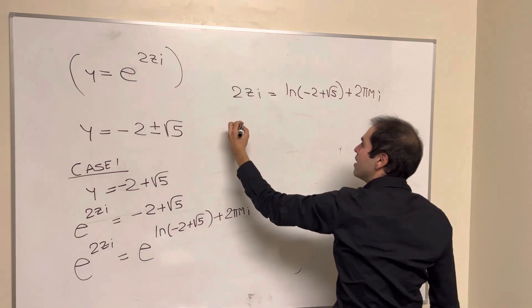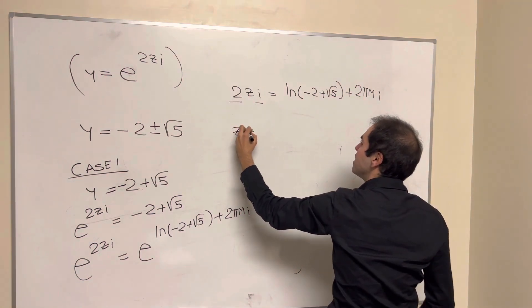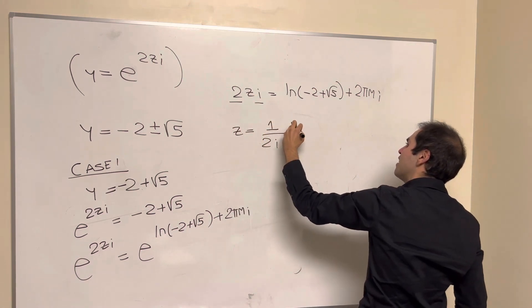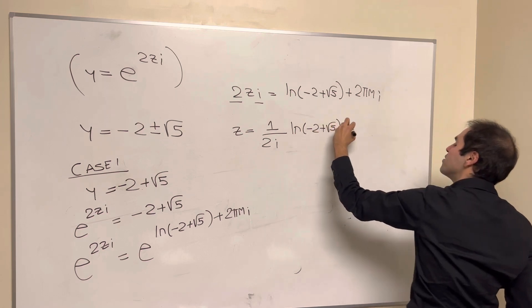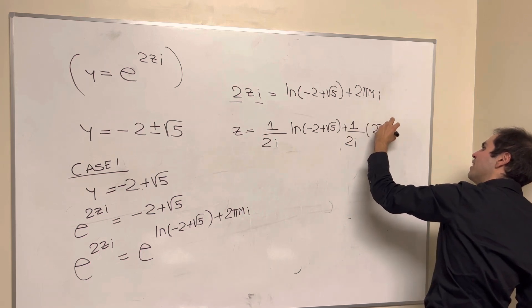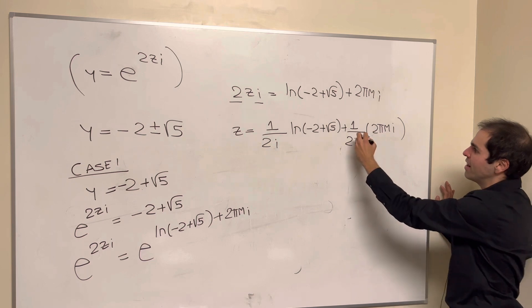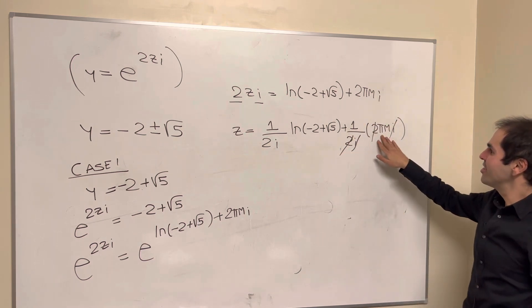And then dividing by 2i, we get z is 1 over 2i, ln of minus 2 plus square root of 5, plus 1 over 2i, 2 pi mi. And this simplifies so the i's cancel out, the 2's cancel out. So you literally get pi m.